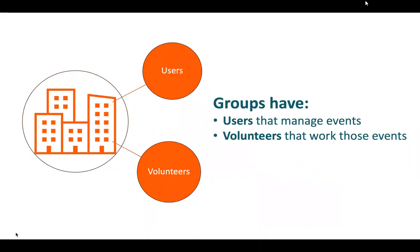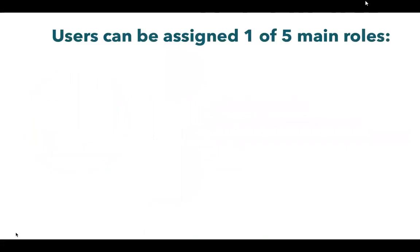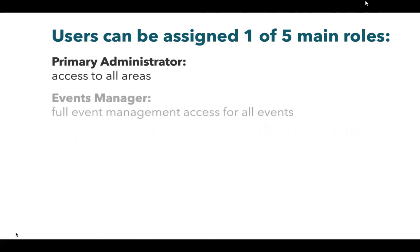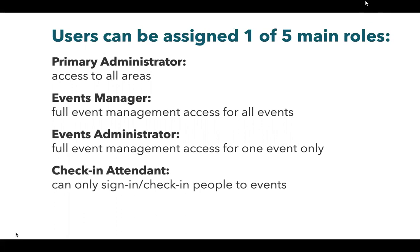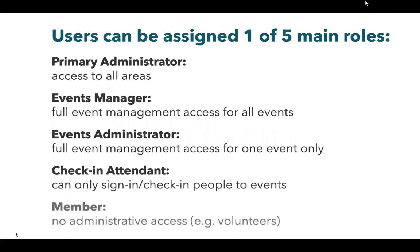Groups have users that manage events and volunteers that work those events. Users can be assigned one of five main roles. Your primary administrator has access to all areas within your organization's space on the BGSU SERVS platform. Your event managers have full access to event management for all events inside your organization. The events administrator has the same rights as an event manager, but only for one specific event — they can be assigned to multiple, but they don't have access to all events. Your check-in attendants only have access to sign people into your events. And lastly, your members don't have any administrative access — these are generally reoccurring volunteers.